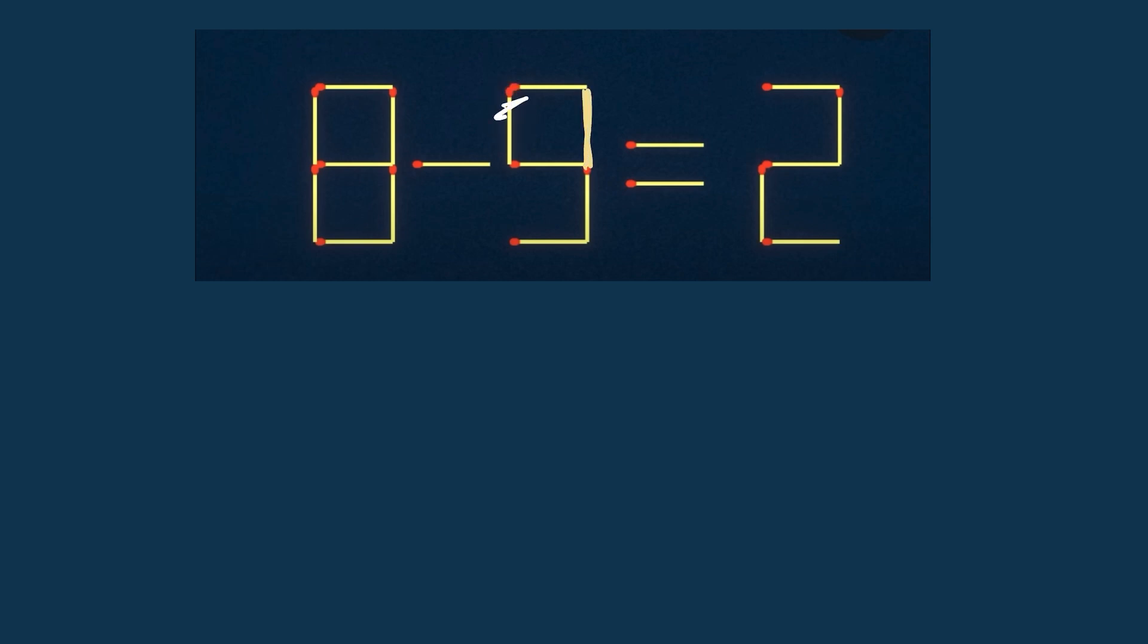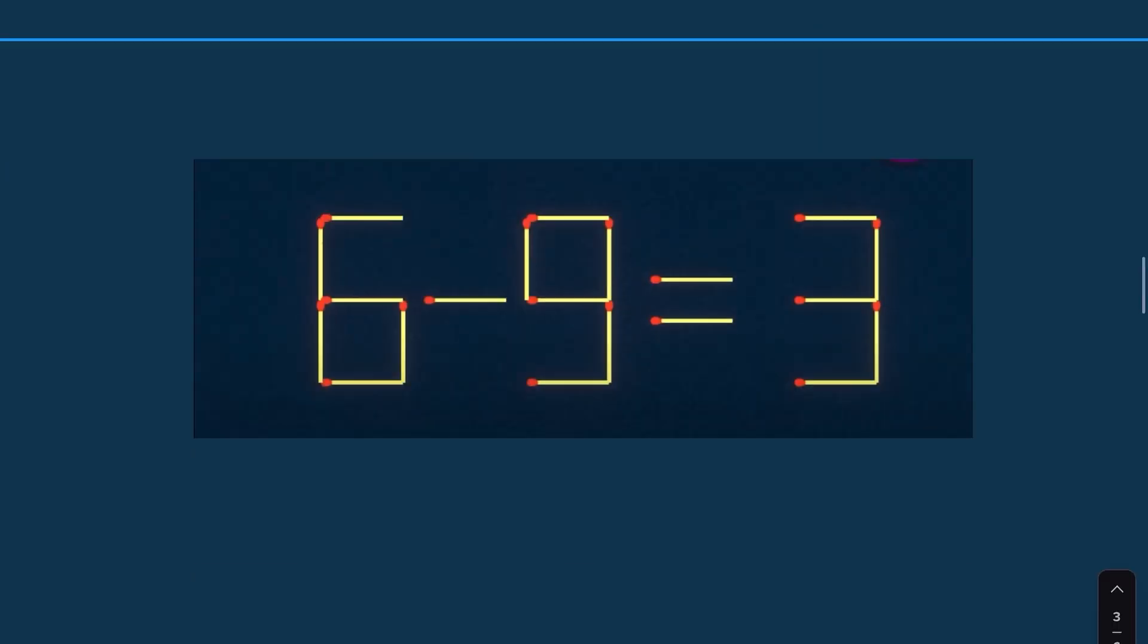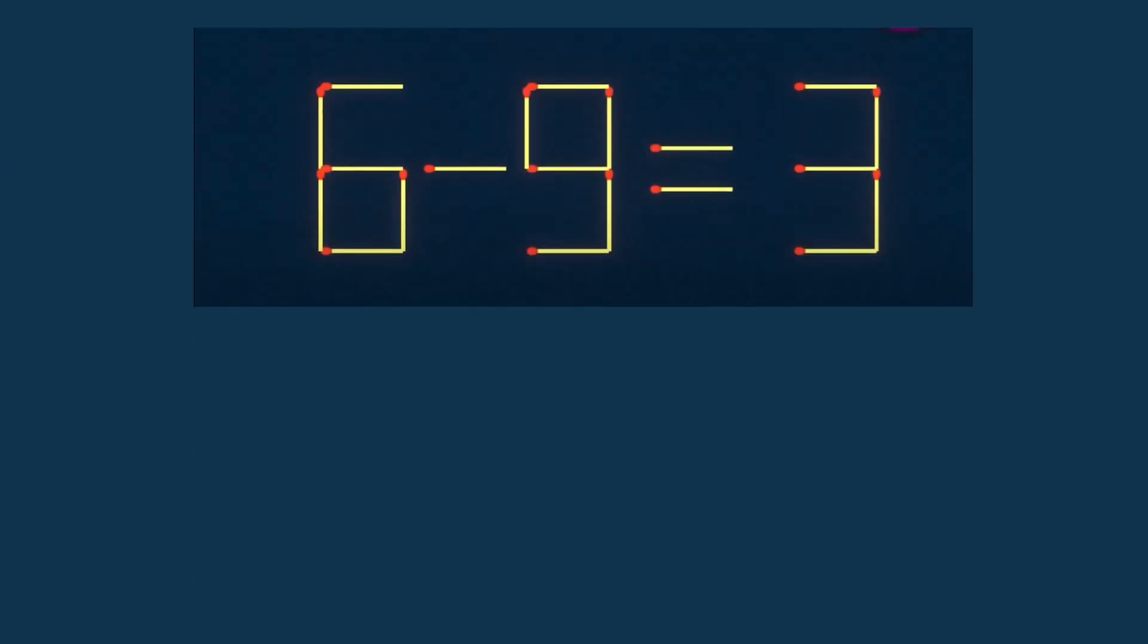it here. So this is now 8 minus 3, or then it is 8 minus 5 equals 3. But that's not correct either. So what do you think? Which stick should we move? We can move this one stick from here and put it here. Then it is 8 minus 5 equals 3.